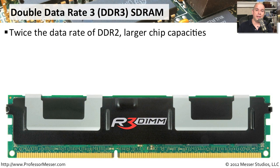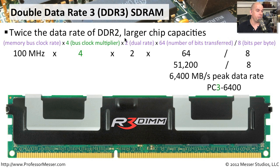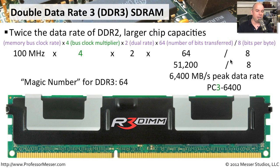The latest generation is DDR3, which is twice the data rate of DDR2, and supports much larger modules. Using the same formula with the updated bus clock multiplier, a 100 MHz memory clock rate yields a peak data rate of 6,400 MB per second. This is designated as PC3-6400. The magic number for DDR3 is 64 — multiply 100 MHz by 64 to get 6,400 MB per second, or divide 6,400 by 64 to get 100 MHz.